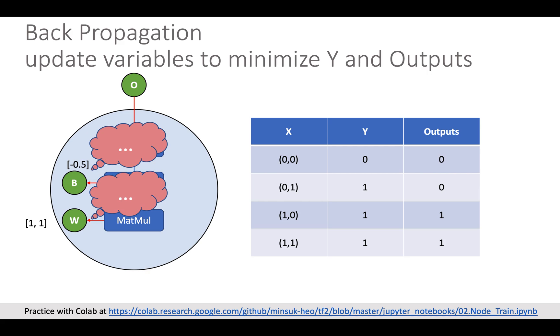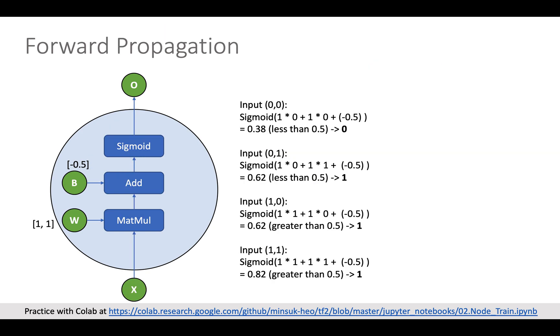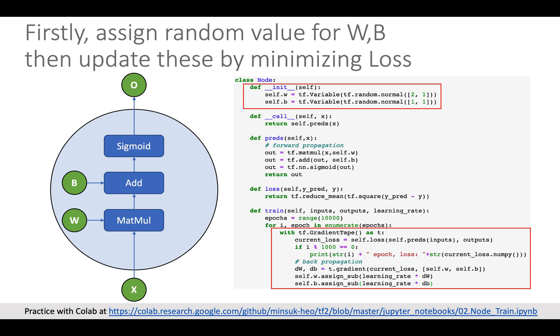Well, so the node will reduce this error during the back propagation and will update its variable again. And finally, you can see the forward propagation doesn't have error. So the train can stop now.